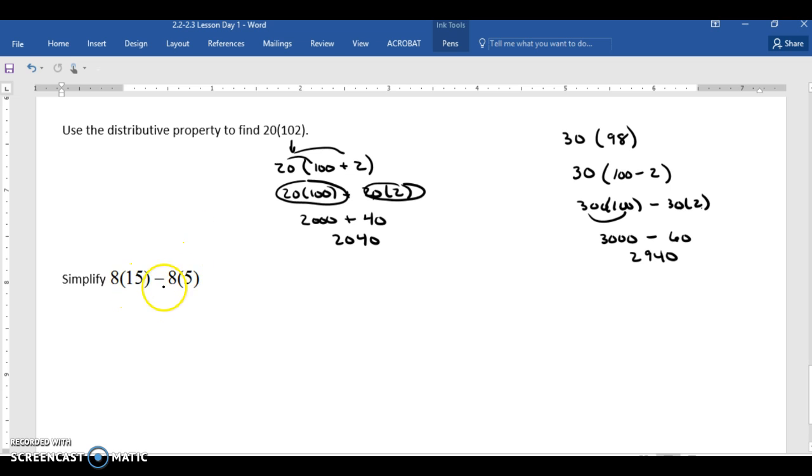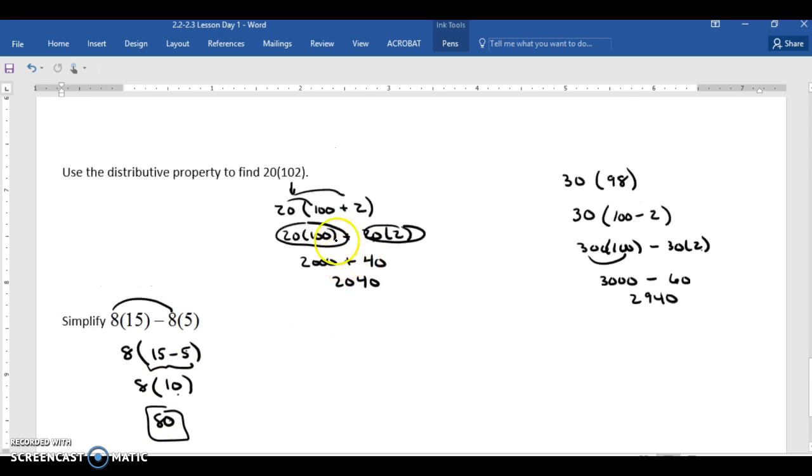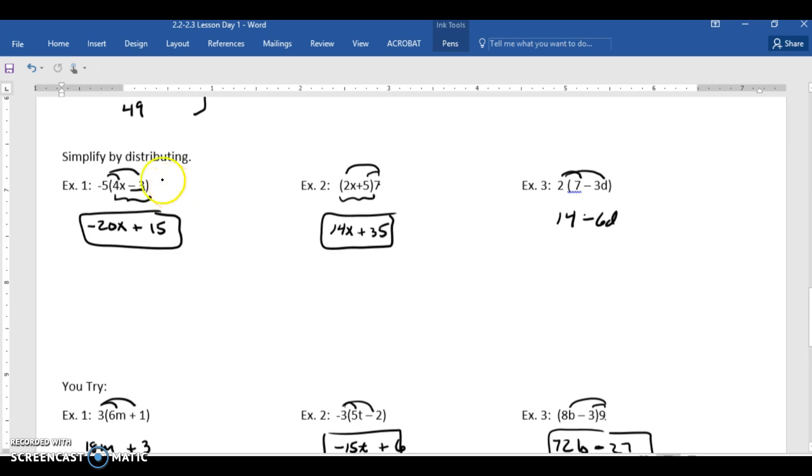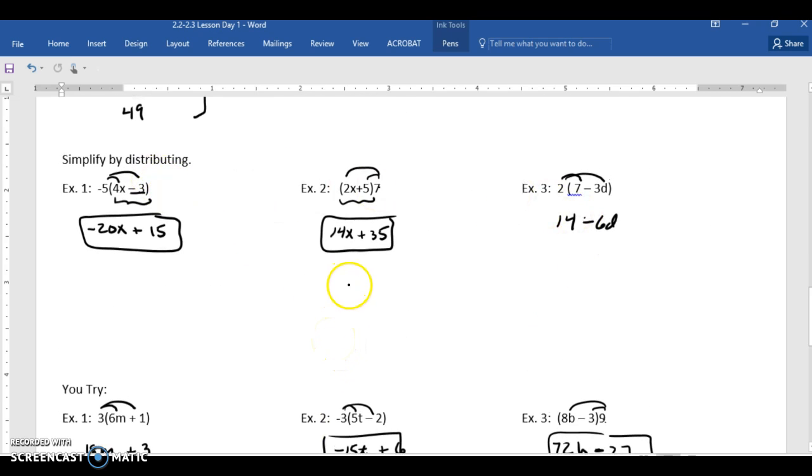When we look at here, simplifying 8 times 15 minus 8 times 5, these could be a little challenging to do in your head. So what mathematicians do is they can work backwards by rewriting this. You can tell 8 was distributed to both these terms. So we're going to write 8, then we're going to put the 15 minus 5 in parentheses. 8 times 15 minus 5 is 10. And now 8 times 10 is 80. So the important part for tonight's homework is being able to do the distributive property like you see in these examples here. Everything else is the icing on the cake. So work on the reteaching and the practice and send them to me as soon as possible. That's it. Thank you.